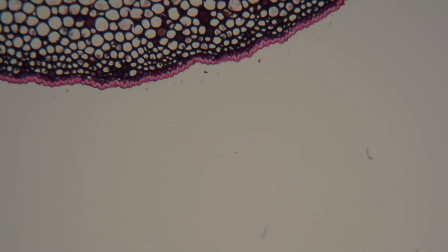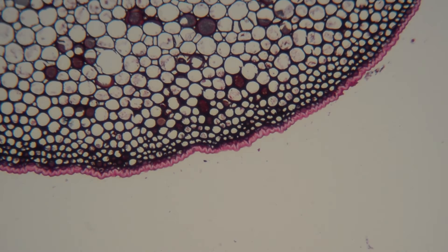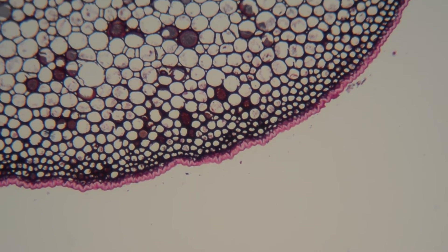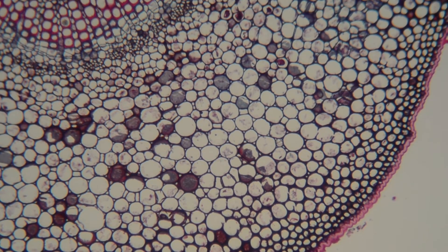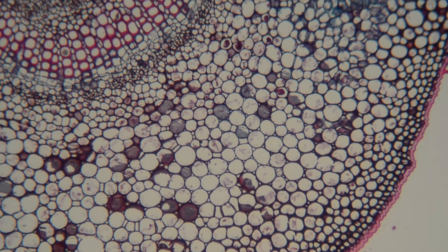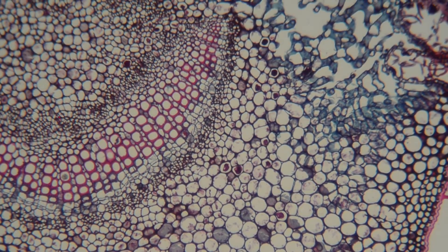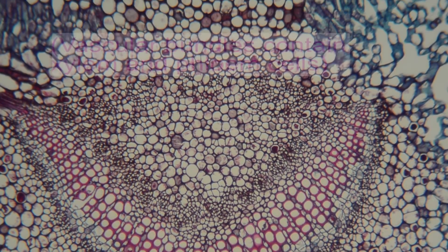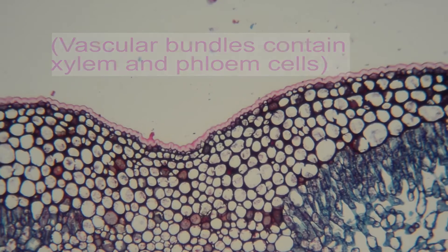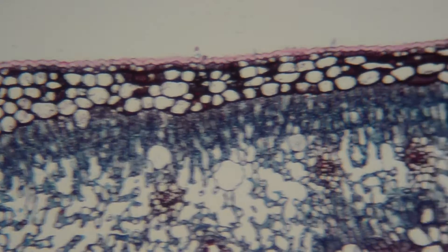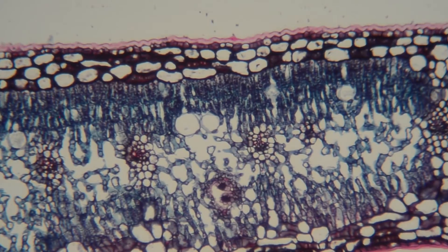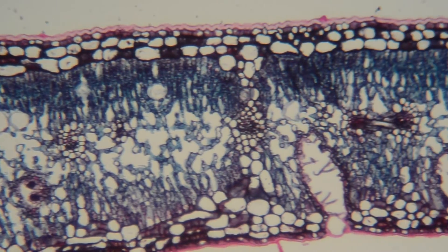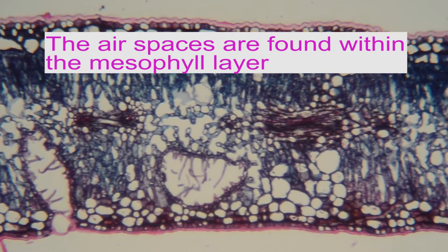We're now at 100 times zoom, and we can see in pink the epidermis cells of this leaf, along with all these storage cells and a vascular bundle. There's also a lot of space in here as we go along this leaf.